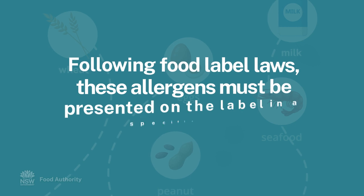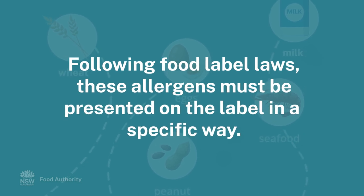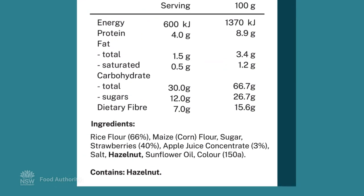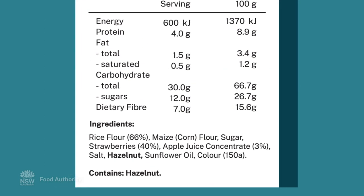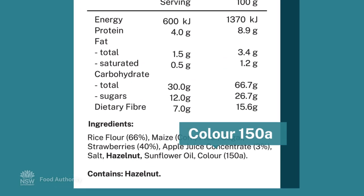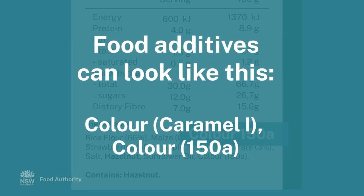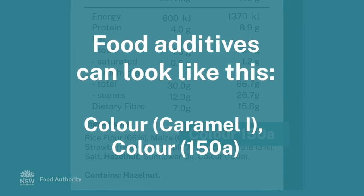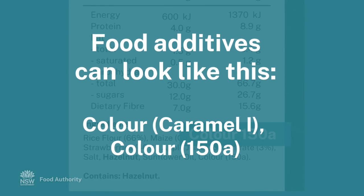Following food label laws, these allergens must be presented on the label in a specific way. Food additives must be in the ingredient list by their class name and the name or number of the food additive — for example, colour caramel I or colour 150A.